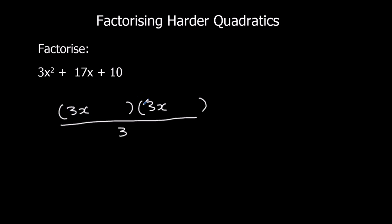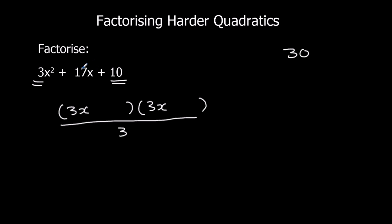When I expand this — expanding is the opposite of factorising — I'm going to get 9x squared, but I'm going to divide it by 3, so it goes back to 3x squared. Then take the first number and the last number and multiply them together. So 3 times 10 is 30. I'm going to look for two numbers that multiply to make 30 but add to make 17.